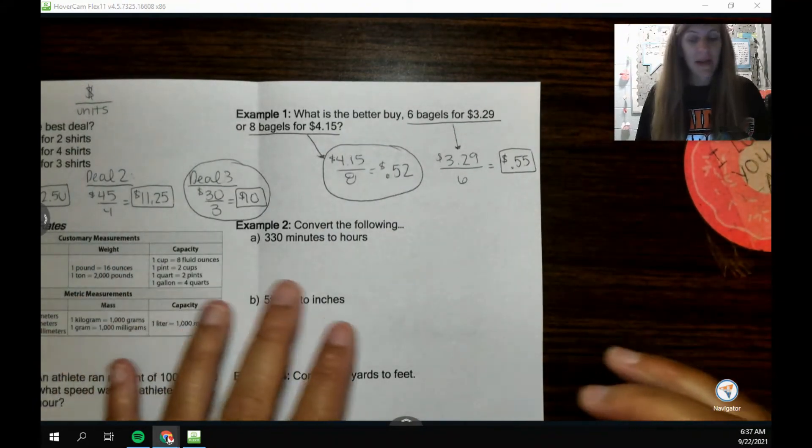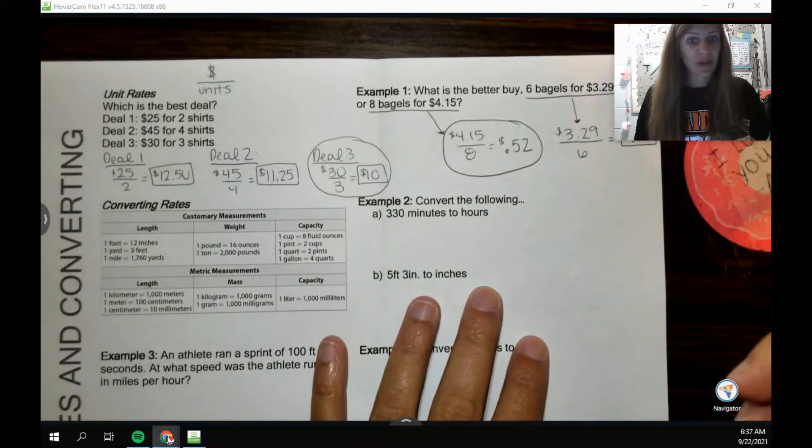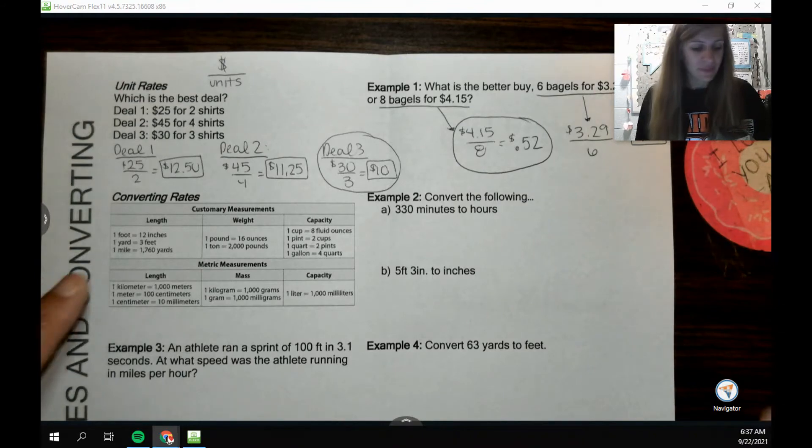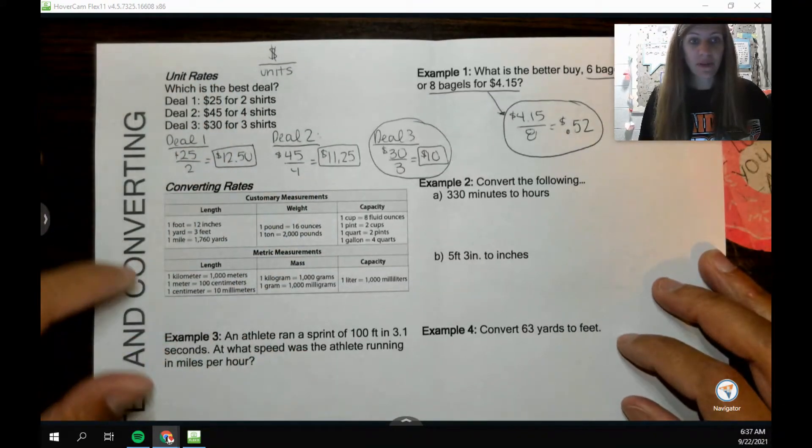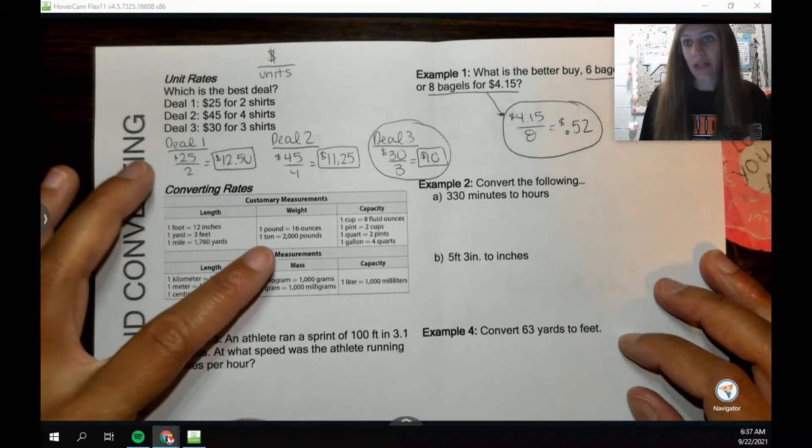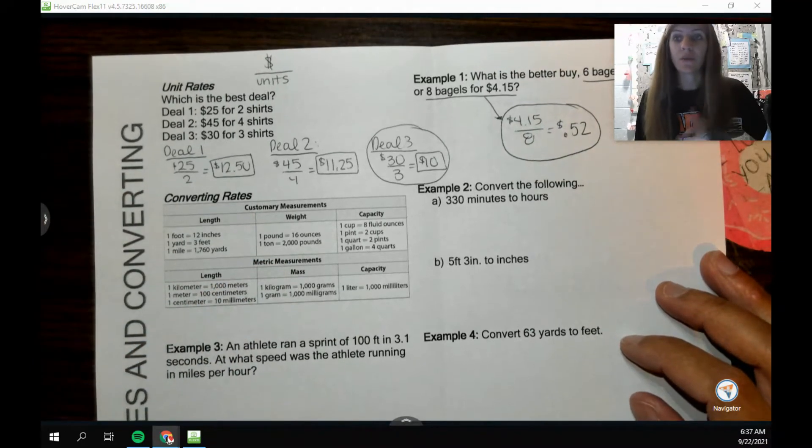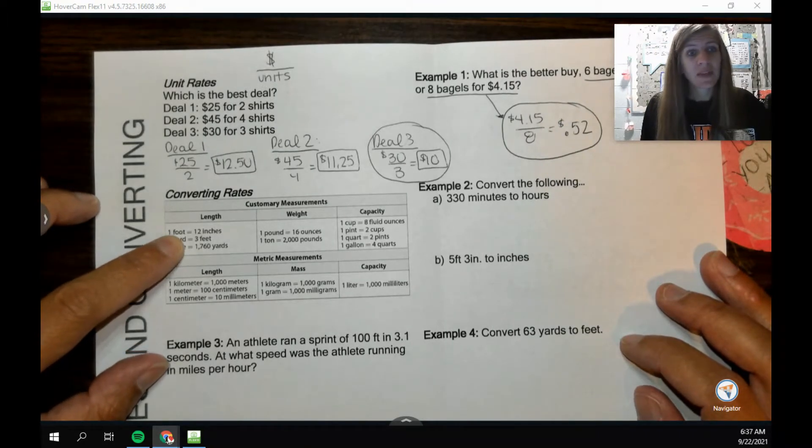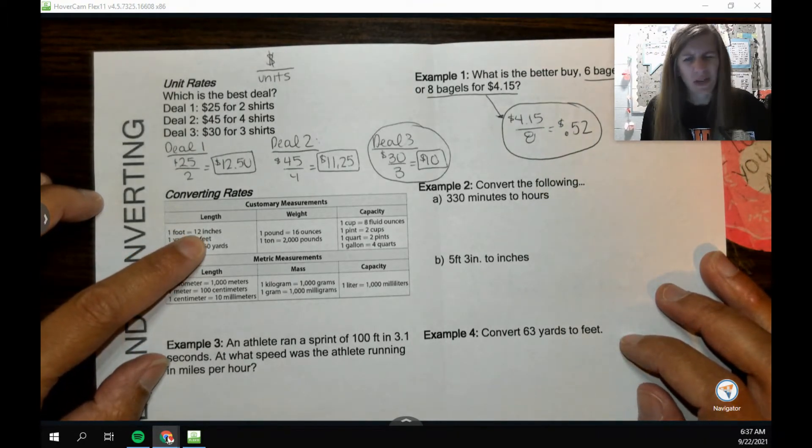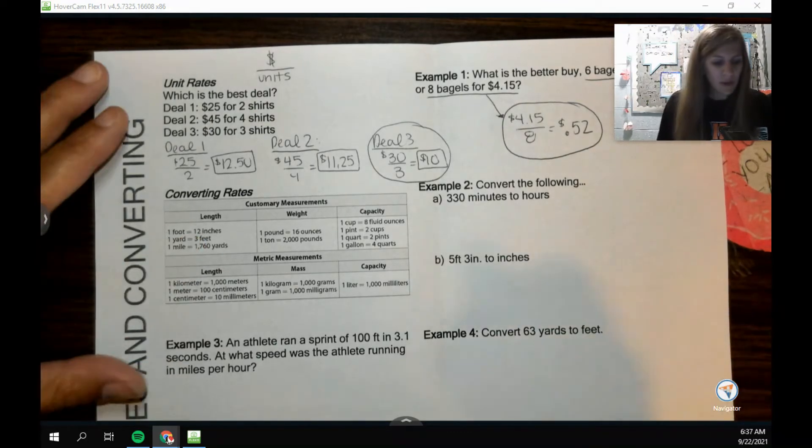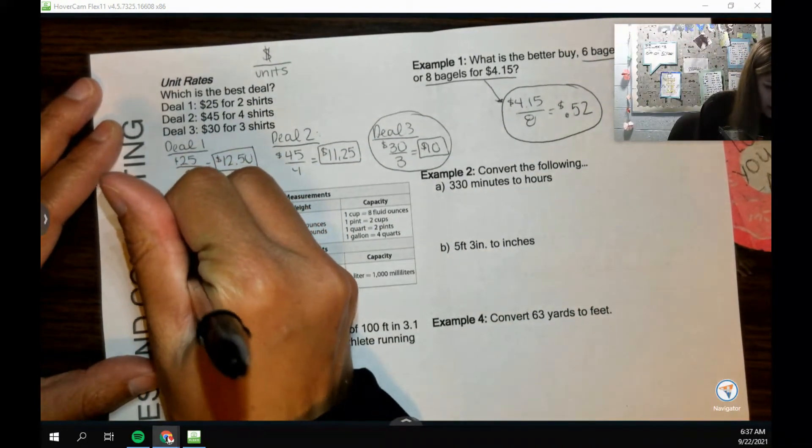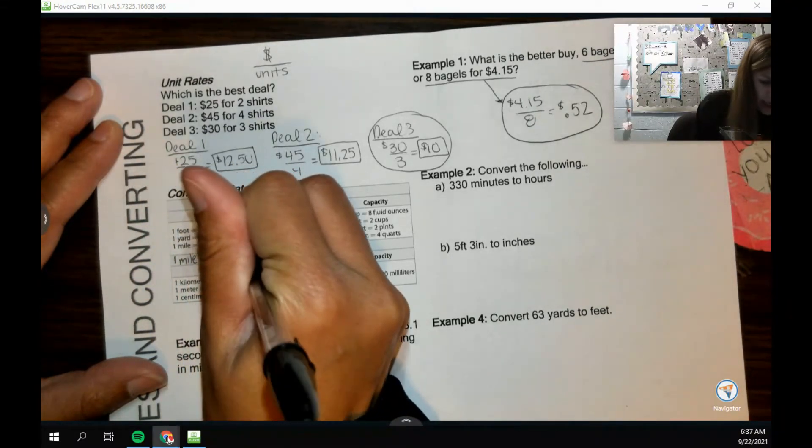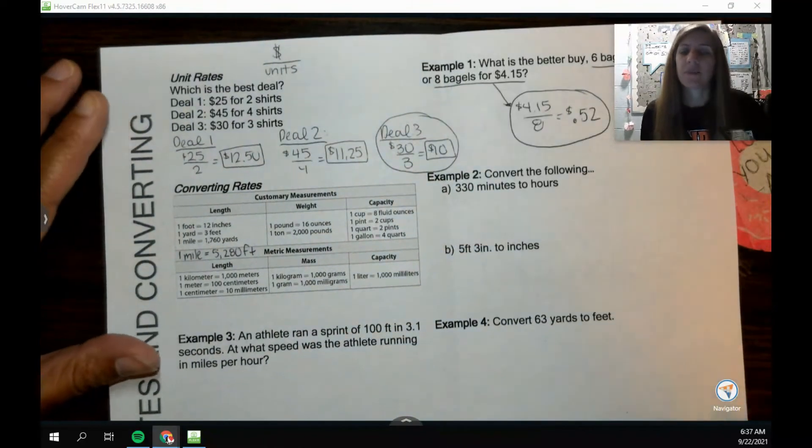Another thing that we like to talk about when we are talking about rates or unit rates is maybe if I need to convert a rate to a different one. This table over here is just a whole bunch of information of how I convert one thing to another. Like, one foot is the same thing as 12 inches. One more that I want to add here is that one mile is equal to 5,280 feet.